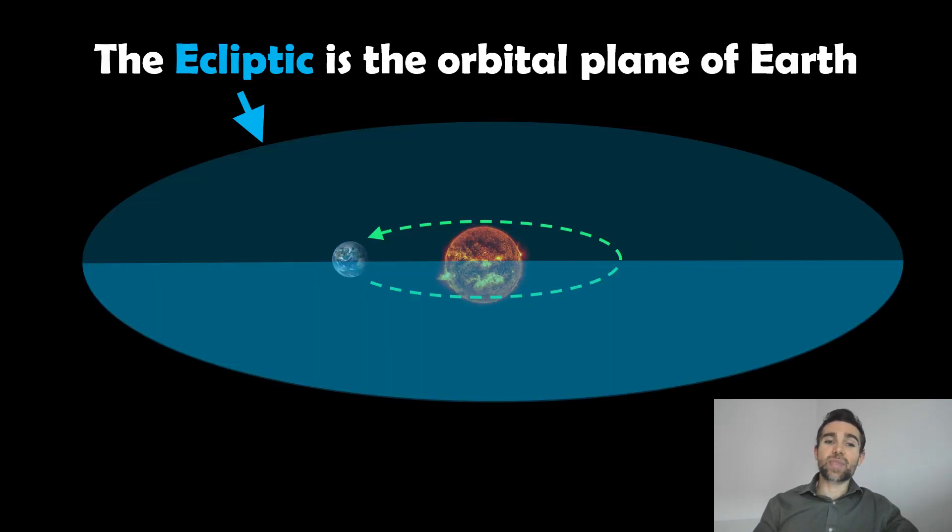The ecliptic then is actually the orbital plane of the Earth. So if we use the plane of the orbit and expand out, then that is going to be our ecliptic. So that's essentially what it is.